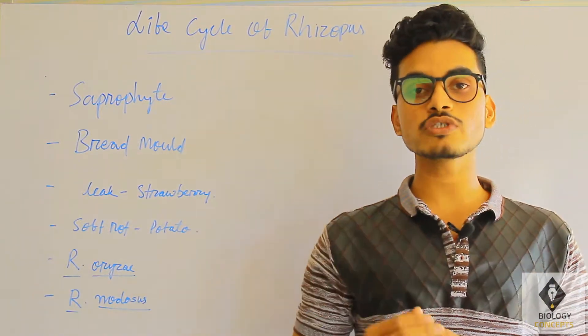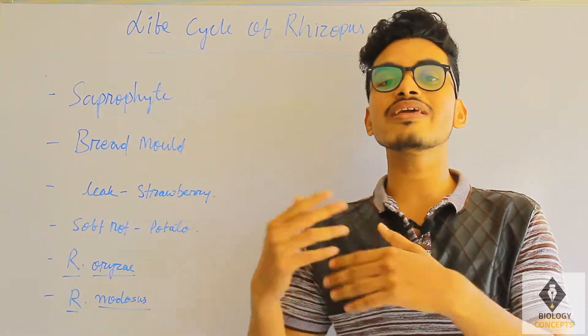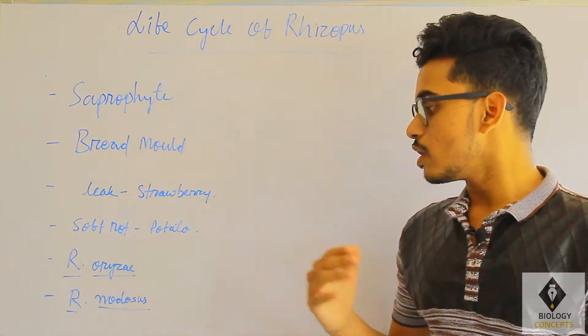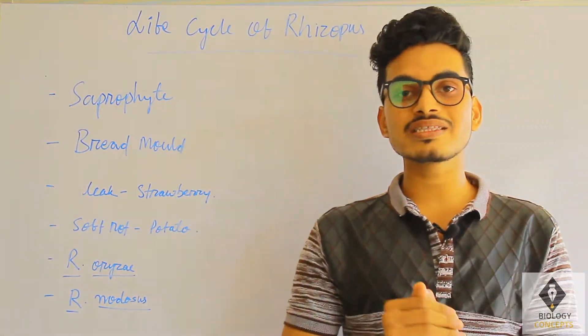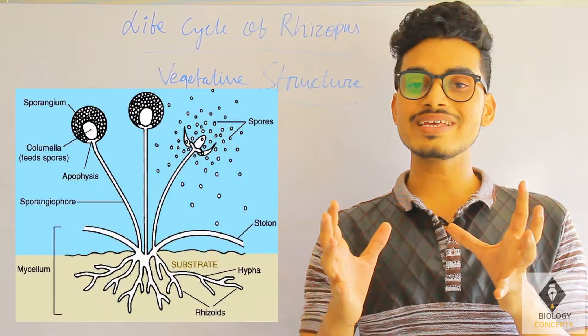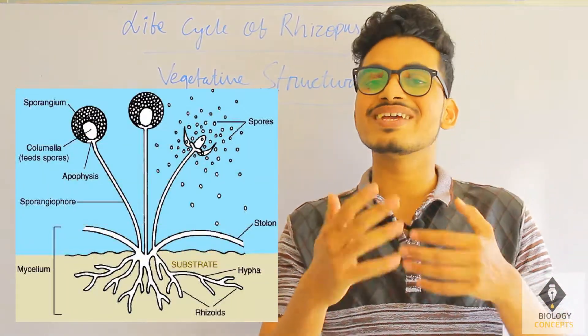Apart from that, we also have other species like Rhizopus oryzae and Rhizopus nodosus. Rhizopus oryzae causes alcoholic fermentation, and Rhizopus nodosus causes lactic acid fermentation.